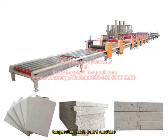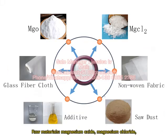Magnesium Oxide Board Machine. Raw materials include: Magnesium Oxide, Magnesium Chloride, Glass Fiber, Cross Non-Woven Fabric, Additives, and Sawdust.